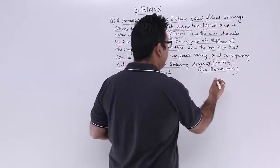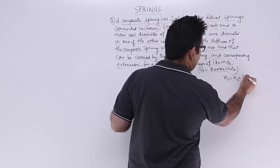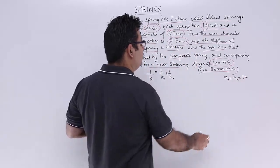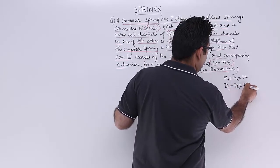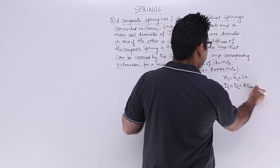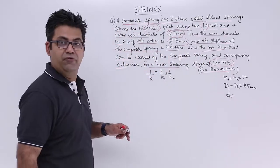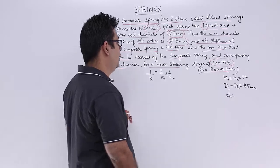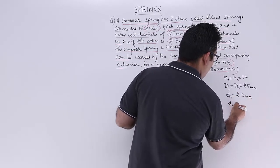So you are given the number of turns first of all, number of coils. So N1 equals N2 which equals 12. The mean coil diameter is also the same. So D1 equals capital D2 which is 25 mm. Let's write mm over here. You have the wire diameter for one of the springs, 2.5 mm. We need to find out D2.